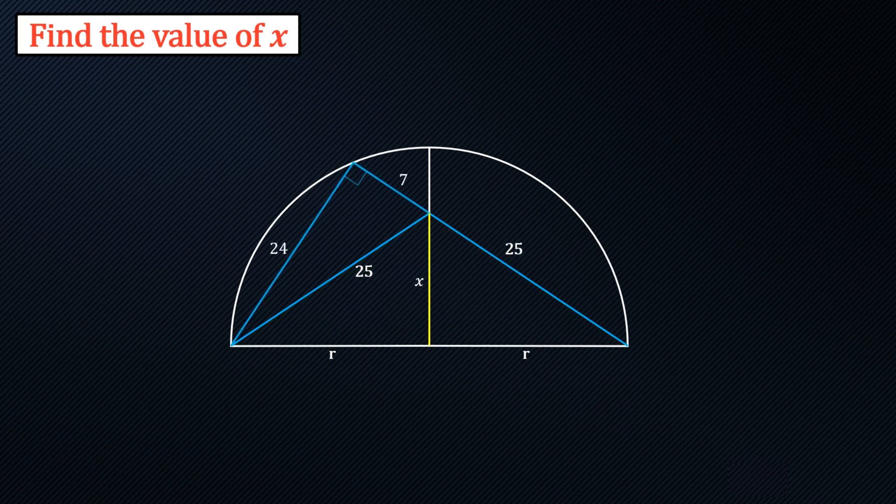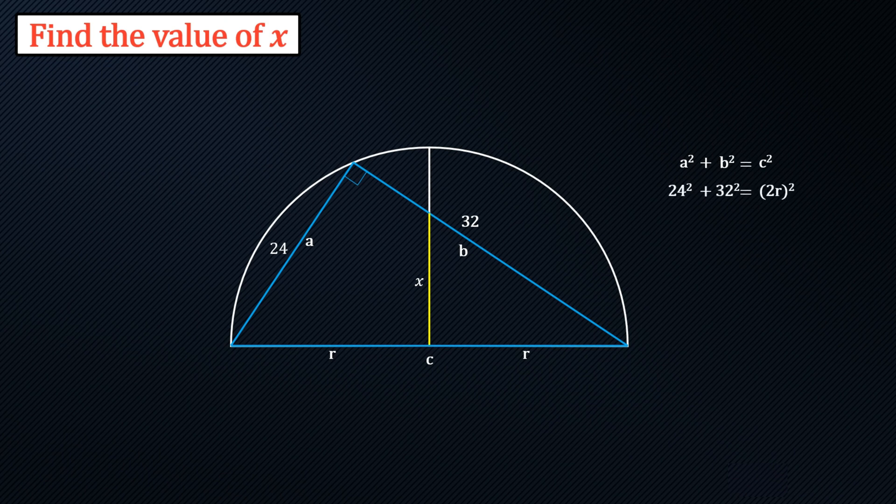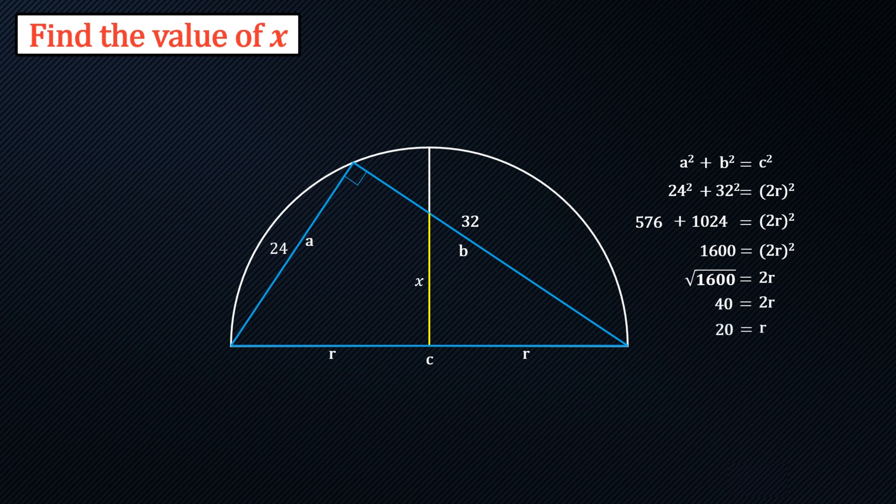Now because this is a length of 25 we've actually got a side length of 32 so we have another right triangle. We can use Pythagoras theorem again where a squared plus b squared is c squared. a is 24, b is 32 and c is twice the radius so 576 plus 1024 is 1600. Take the square root so twice the radius is 40 which means that the radius must be 20.